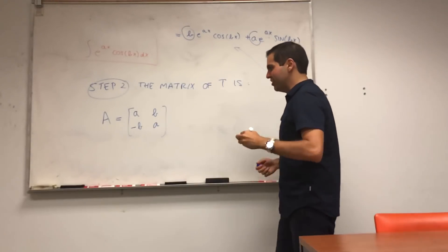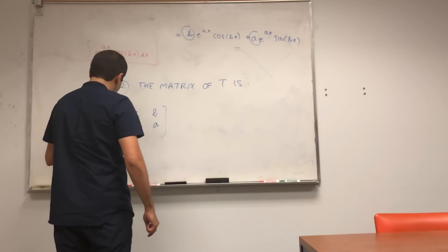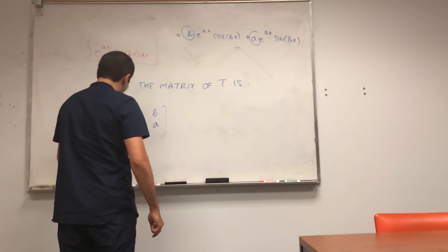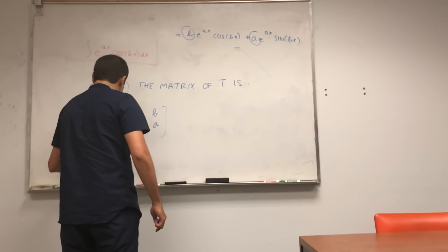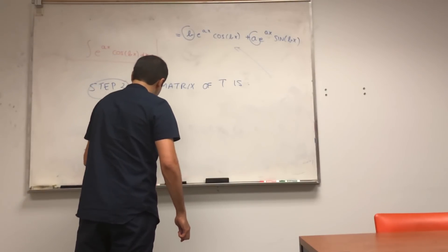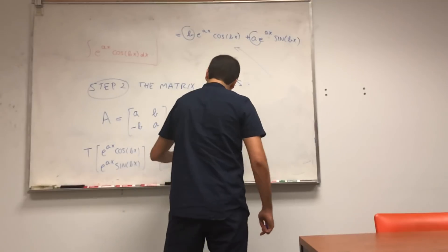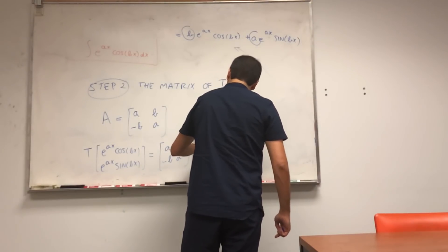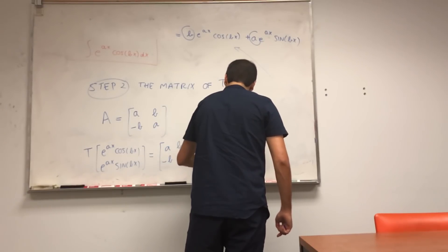All right, what does that tell you? It really tells you that t applied to e to the ax cosine of bx and e to the ax sine of bx equals to the matrix a, minus b, b, a times the vector e to the ax cosine of bx, e to the ax sine of bx.